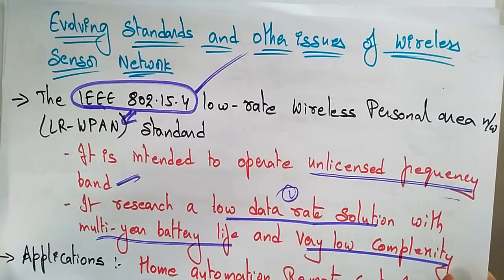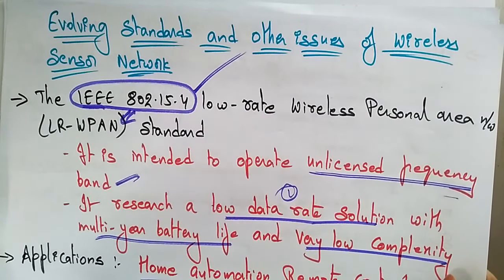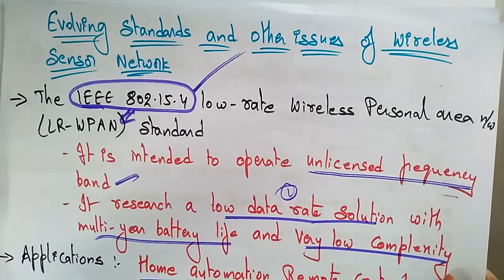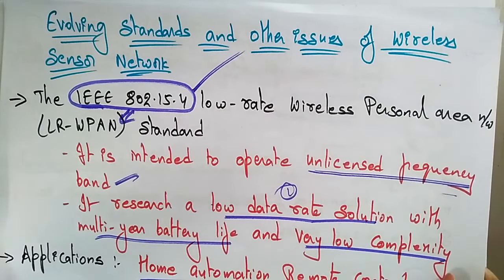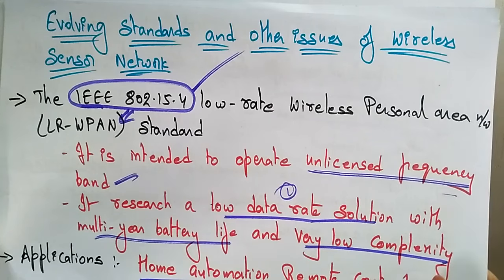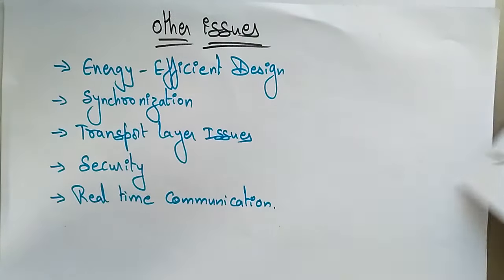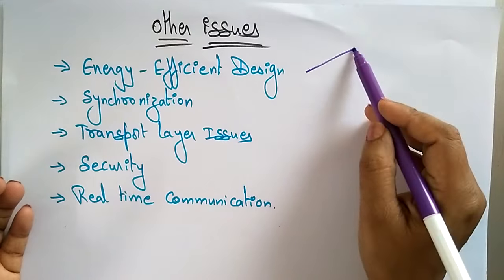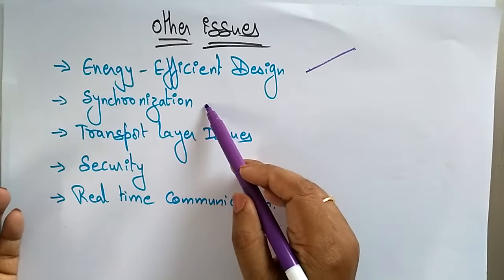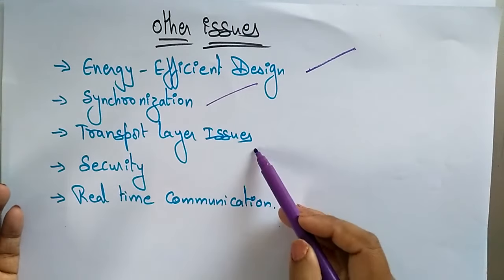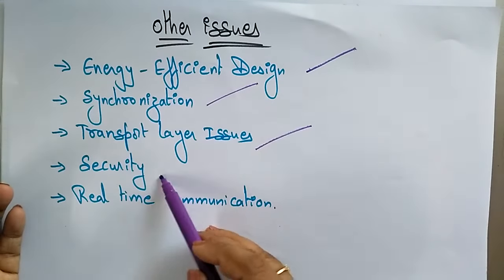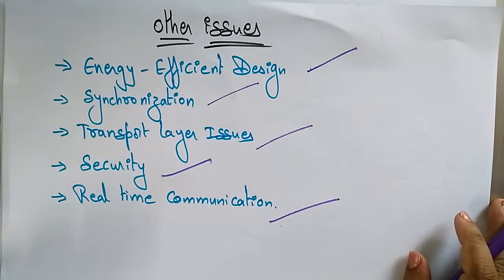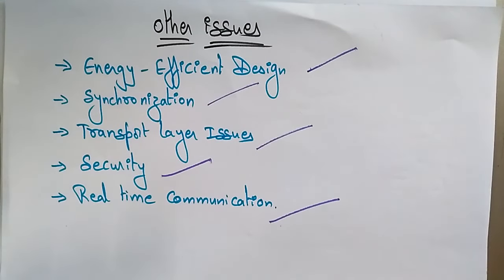That covers the evolving standards in wireless sensor networks, specifically IEEE 802.15.4, the LR-WPAN standard. The remaining other issues include energy-efficient designs, synchronization, transport layer issues, security, and real-time communications.